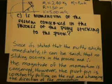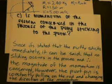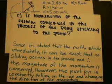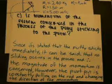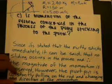However, the pivot pin is constantly pulling on the rod and changing the direction of the momentum. So the magnitude of the momentum is conserved, however, the direction is constantly changing.